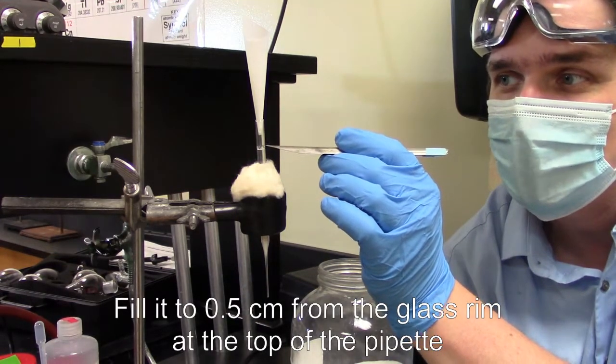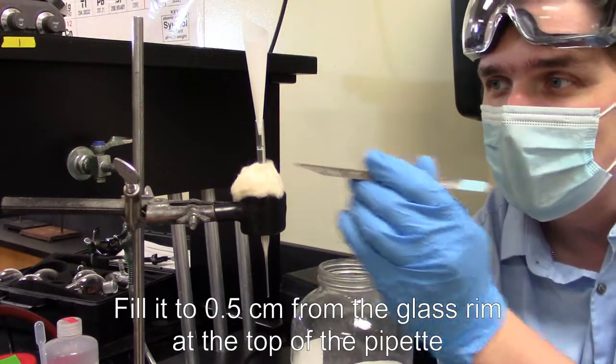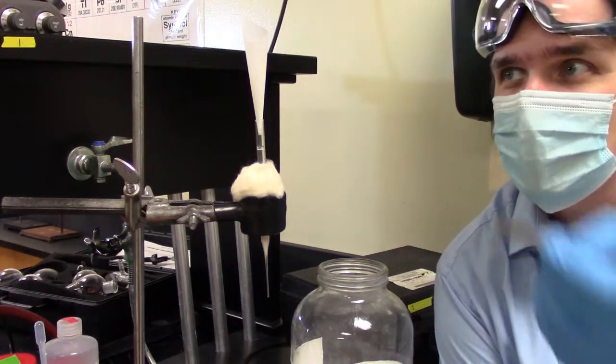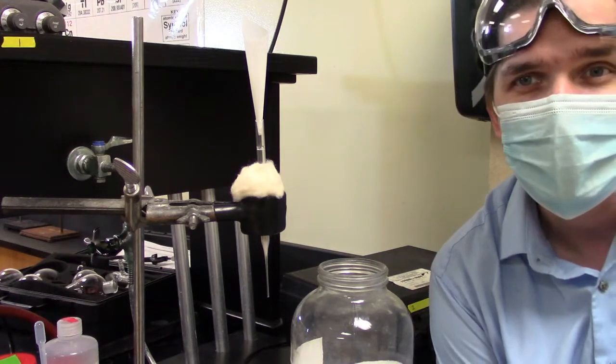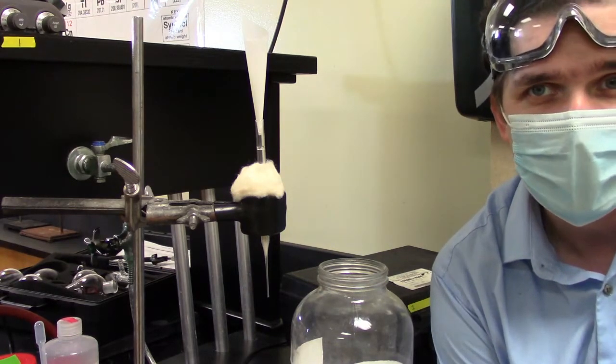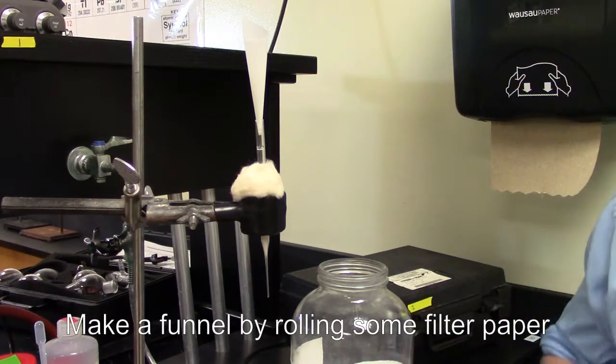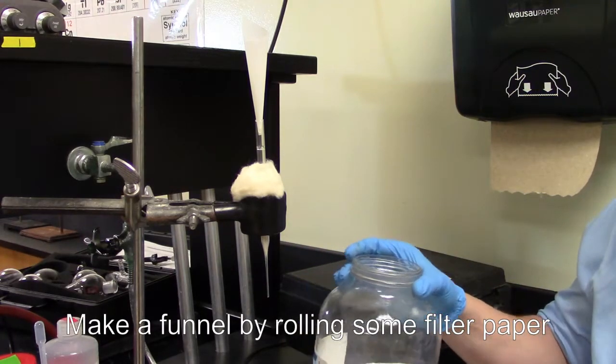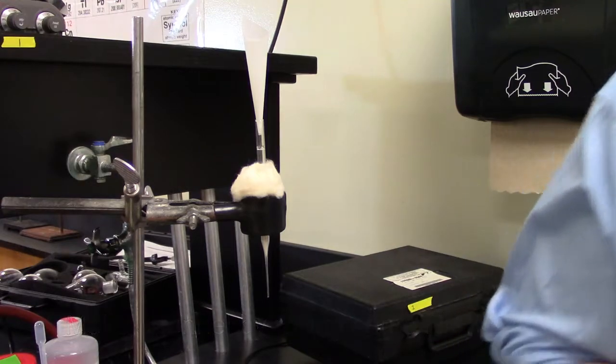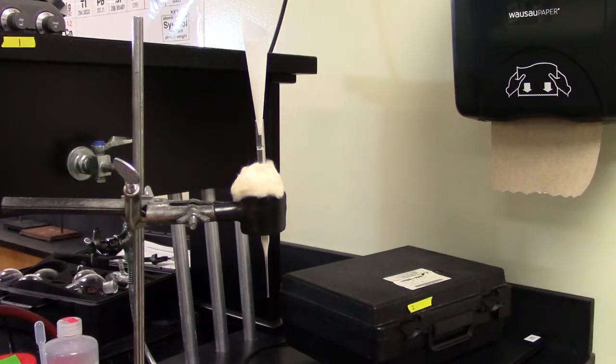Now, we're going to fill it to roughly a half centimeter beneath where we plan on stopping the column. Now, the nice thing about the Pasteur pipettes, there's usually a glass ring in there. So we're going to fill it to half a centimeter below that. And to kind of help with this process, I've created a funnel using a piece of weighing paper. I wasn't so worried about that with the sand before because it's just sand. This is actually silica gel. And so I'm a little bit worried about basically spilling the silica gel.